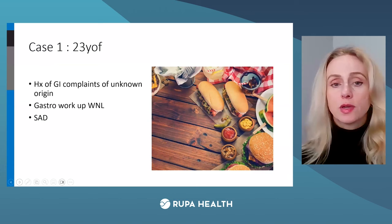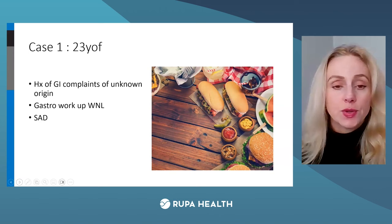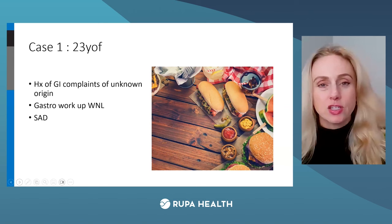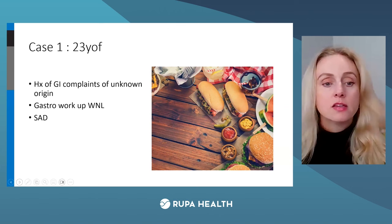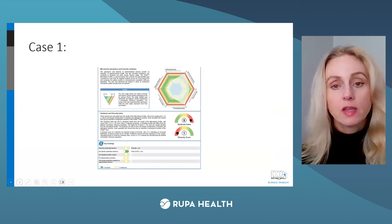Our first case is a 23-year-old female with a history of GI complaints of unknown origin. She's been referred from her primary care doctor to a gastroenterologist, which determined everything was within normal limits. The patient is on a standard American diet. These young individuals — often female-dominant presentations — with significant GI complaints of unknown origin without any relief are common. Let's take a look at the GI 360 for this patient.